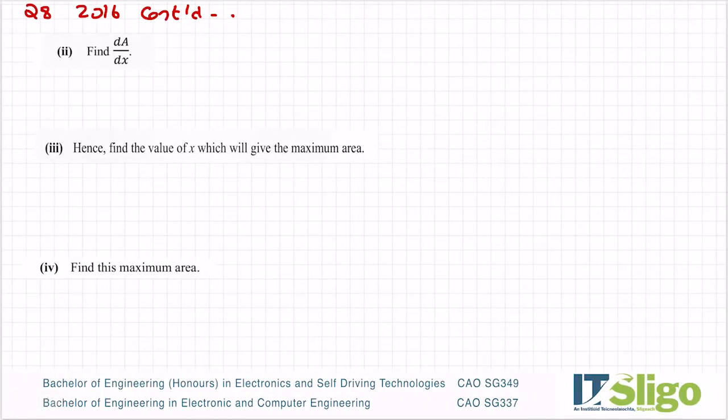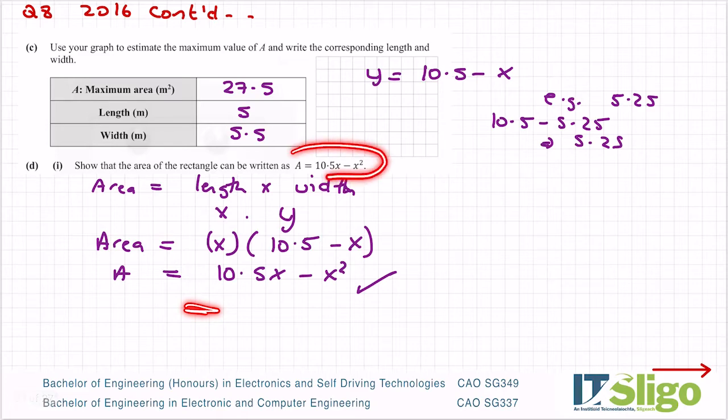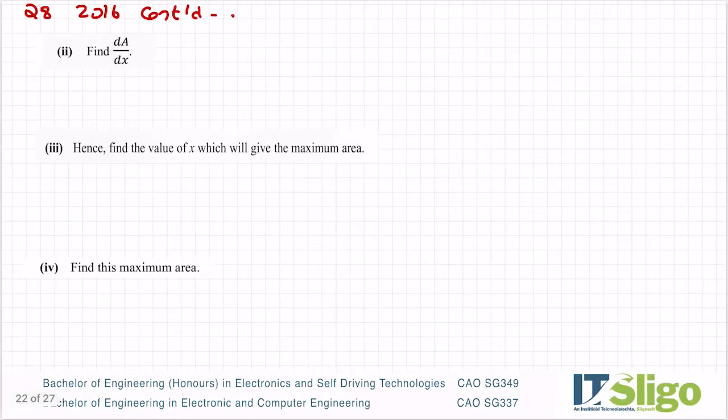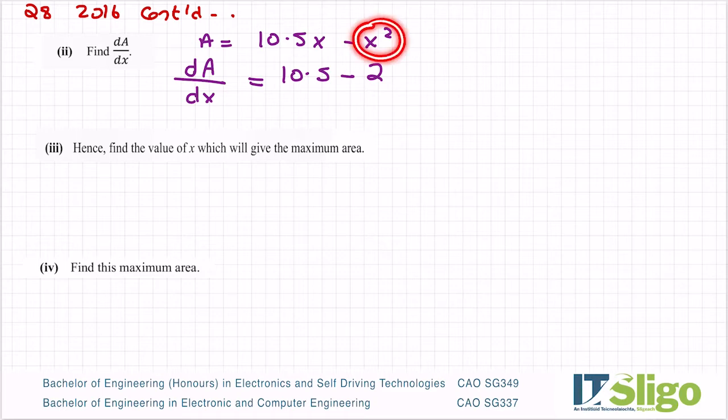Find da/dx. Okay, I like these type of questions because even if you didn't manage to find the area here, they've given it to you, so you can continue on with the question. So a is equal to 10.5x minus x squared. So to differentiate, I'm differentiating the a formula. So that's why it's called differentiating a with respect to the letter that's in it, x. Okay, so take down the power, reduce the power by 1. So it's like you're getting rid of an x every time. So this x goes, so it's 10.5. And this one, take down the power, so the two comes down, and you get rid of one of the x's that's here. Okay, so that's da/dx.